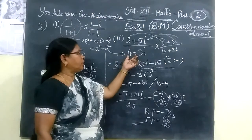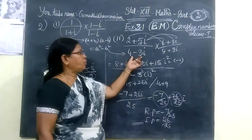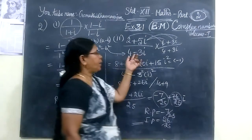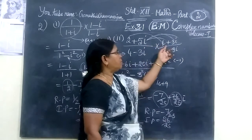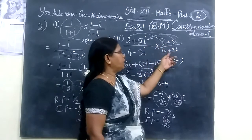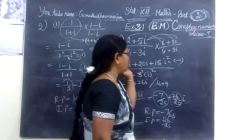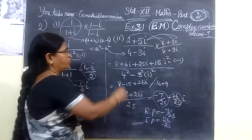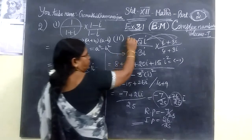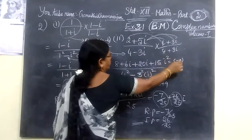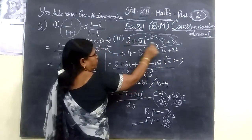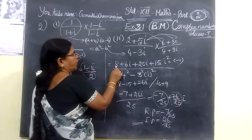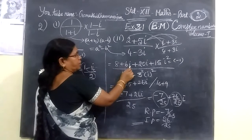Here also you are taking the conjugate — the denominator is 4 minus 3i. After the minus, you are taking plus. So multiply by 4 plus 3i over 4 plus 3i. Multiply 2 into these two terms: 8 plus 6i.